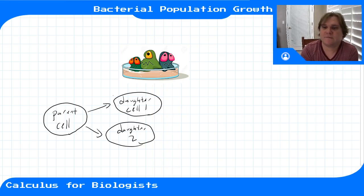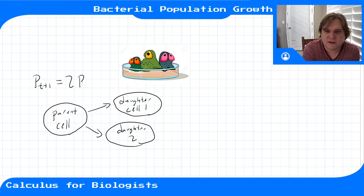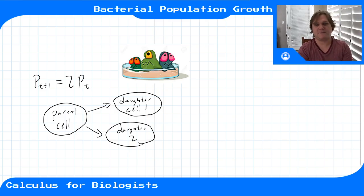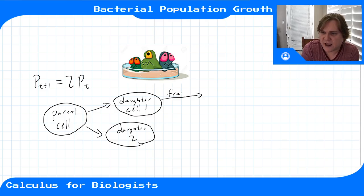In this situation, the population at time t+1 — measured in hours — is two times the population the previous hour, because each parent cell splits into two new cells. Let's make this more general: they split into two, but maybe not all cells survive to produce their own offspring. On average, a fraction sigma survive.